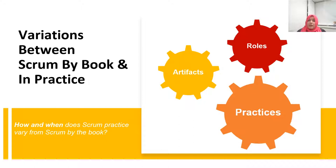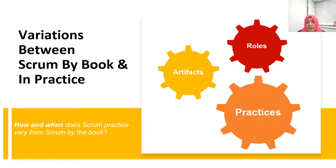While looking at how and when Scrum practice varies from Scrum by the Book, we found variation across three main categories: variations in Scrum roles, variations in Scrum artifacts, and variations in Scrum practices. Some examples of variations in Scrum roles include multiple teams sharing a product owner or a Scrum Master. We also found that teams were practicing Scrum without any Scrum Master, and it was also common that a team member was serving as Scrum Master on a rotational basis. While Scrum by the Book encourages cross-functional teams, our results confirm that it is not uncommon for a team of specialists to practice Scrum.